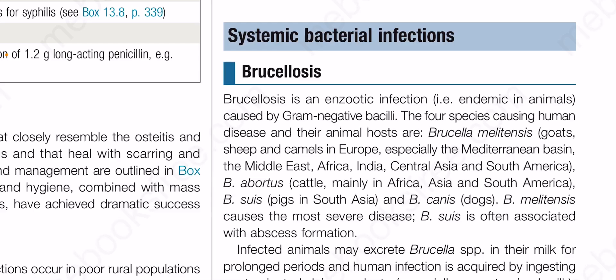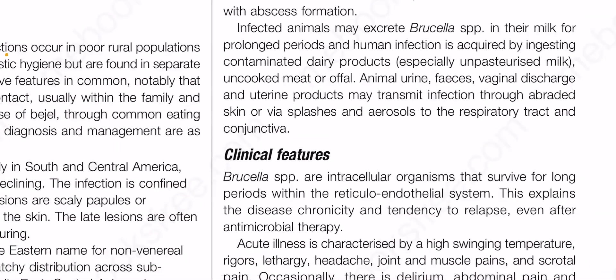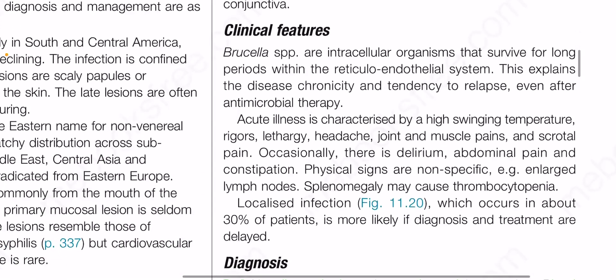Brucella melitensis causes the most severe disease. Brucella suis is often associated with abscess formation. Infected animals may excrete Brucella species in their milk for prolonged periods, and human infection is acquired by ingesting contaminated dairy products — especially unpasteurized milk — uncooked meat, or offal. Animal urine, feces, vaginal discharge, and uterine products may transmit infection through abraded skin or via splashes and aerosols to the respiratory tract and conjunctiva.